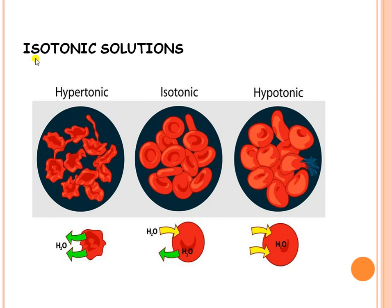A hypertonic solution contains solute at higher concentration than required for isotonicity. When red blood cells are placed into a hypertonic solution, shrinkage of the cell occurs. This is because there is an osmotic pressure difference between the cell content and the solution, so water molecules inside the cell pass through the semi-permeable membrane of the cell and enter into the solution — causing cell shrinkage.